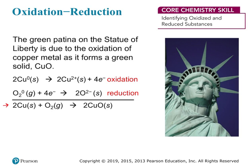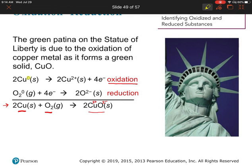In this reaction, initially we have neutral copper and neutral oxygen. Copper gives some of its electrons to oxygen and we end up forming an ionic compound, copper 2 oxide, where copper has a 2+ charge and oxygen has a 2- charge. We can also write this as two half reactions, focusing separately on the oxidation or reduction process. In the oxidation half reaction, copper starts neutral and loses two electrons to become a 2+ ion.